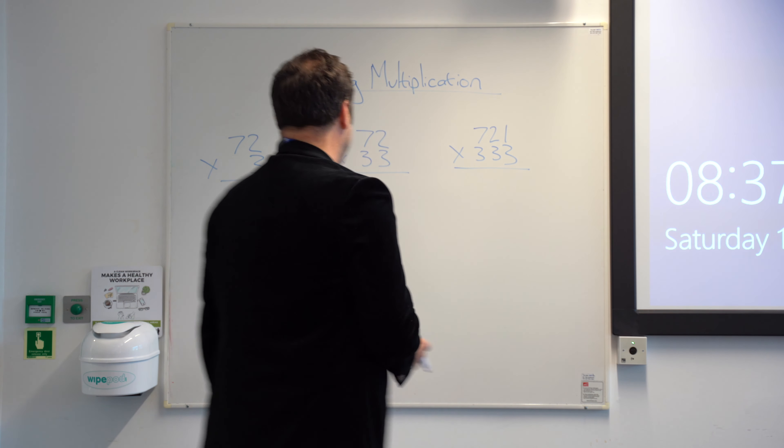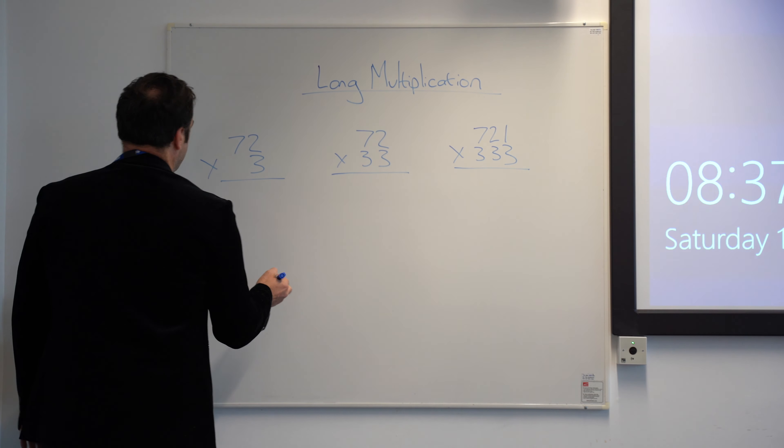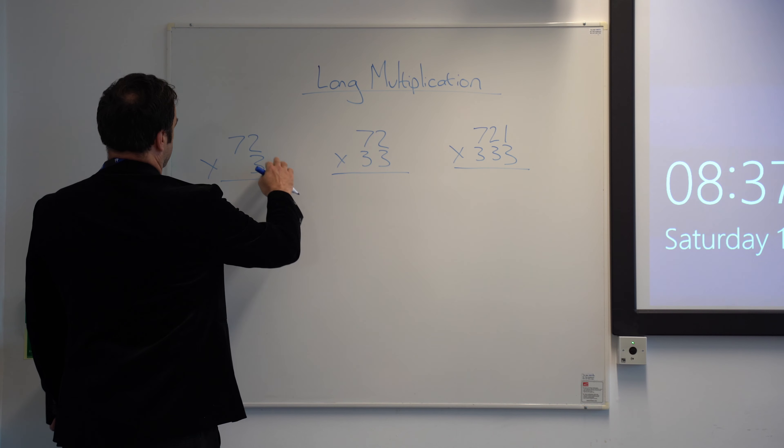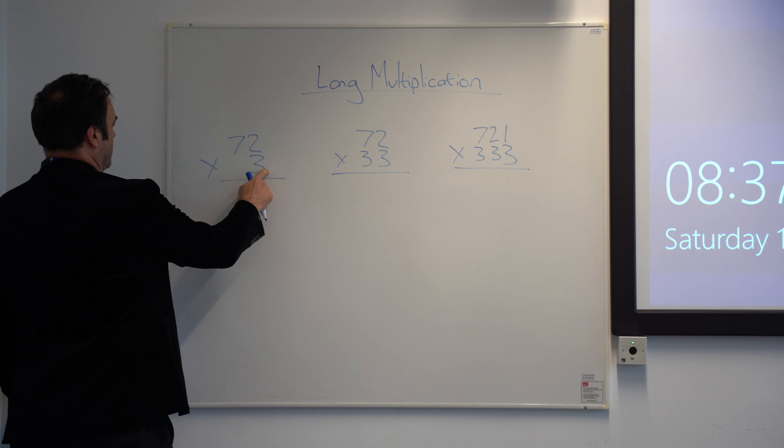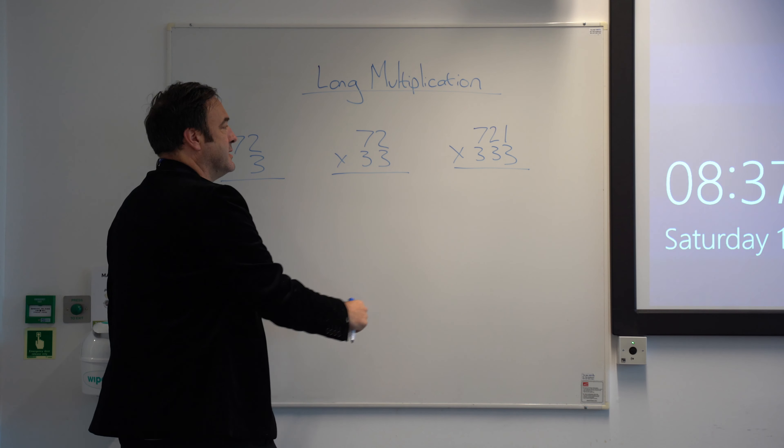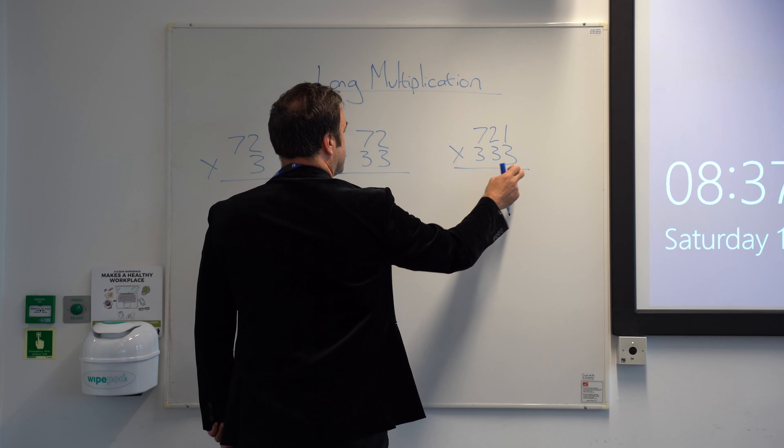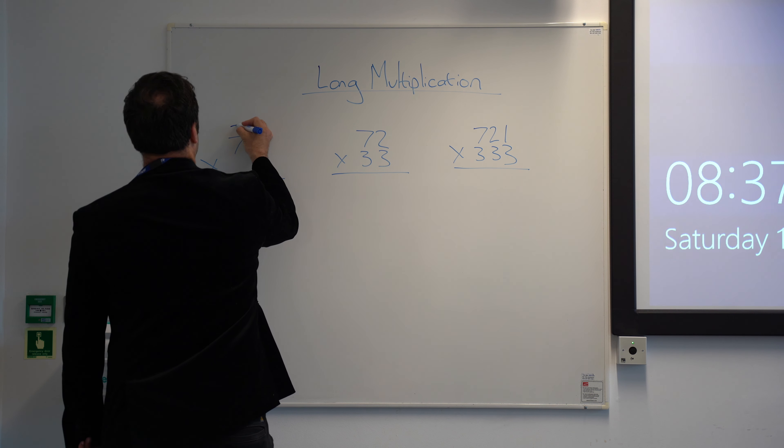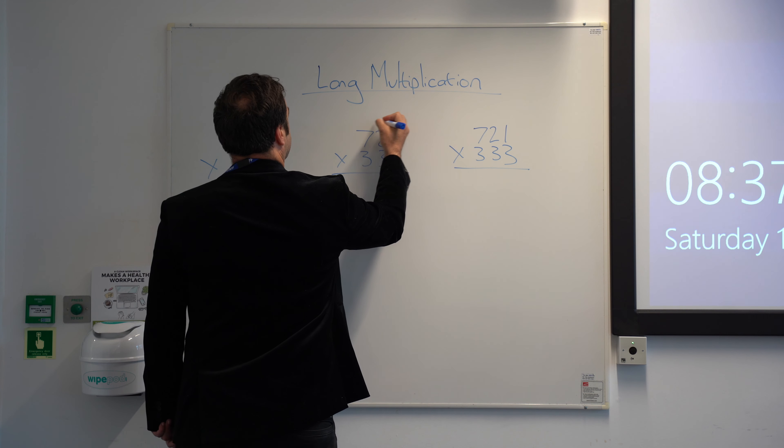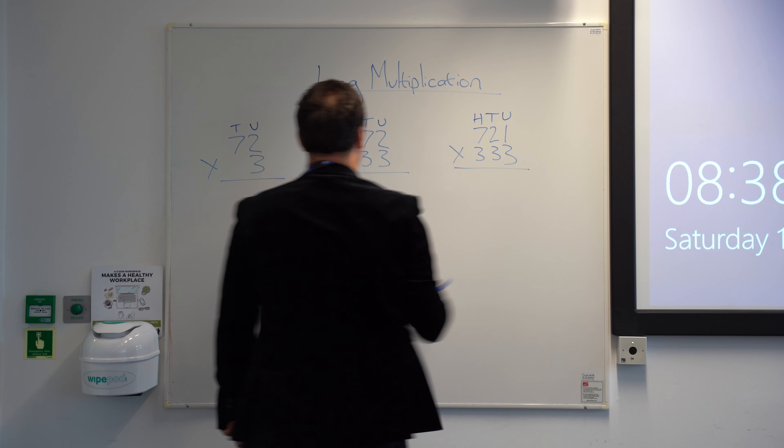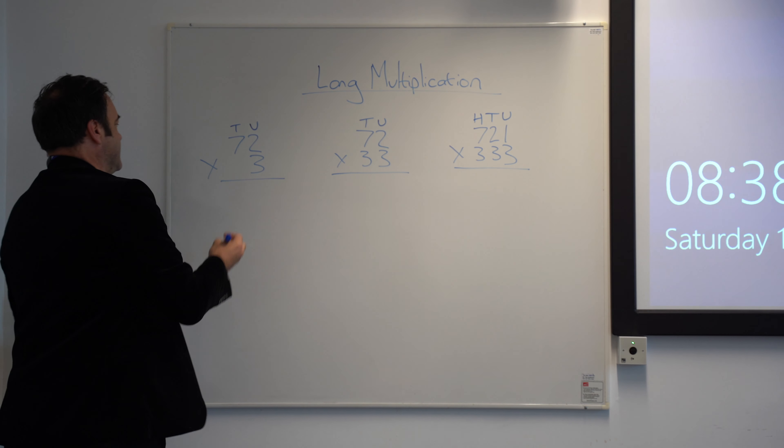So I'm going to go through this first. With this, I've graduated it, so I've got a 2 digit number times a 1 digit number, a 2 digit number times a 2 digit number, and a 3 digit number times a 3 digit number. So here we've got units and tens, units and tens, but on this one we've got units, tens and hundreds.